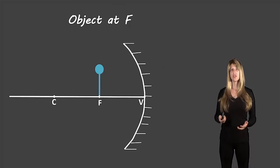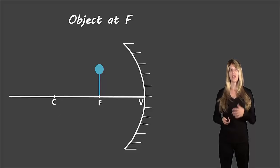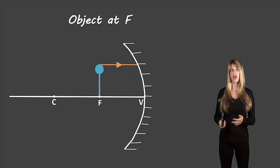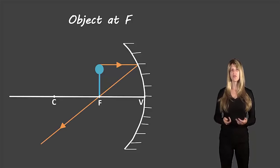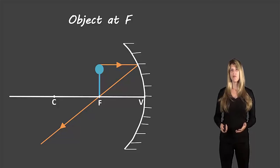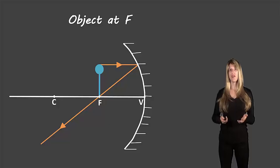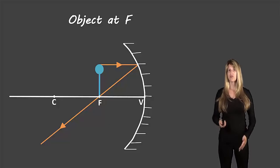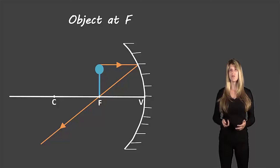Let's take a look at what happens when the object is at F — a different location than the three we looked at before. We start the same way with an incident ray parallel to the principal axis, which reflects through F. That's the exact same rule. Last time our second rule was that the ray went through F, but we can't do that this time because the object is directly on F, so we'll have to use a different rule.